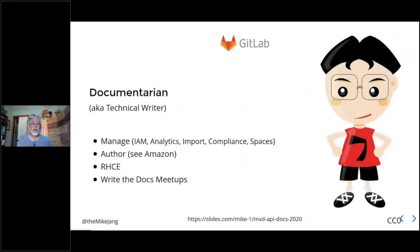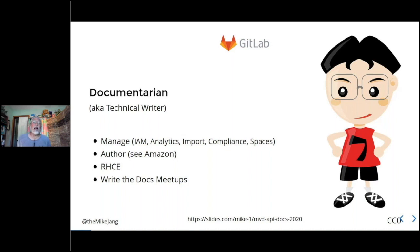Now to introduce myself: I call myself a documentarian, also known as a technical writer. I work for a company called GitLab, and we refer to ourselves as a single application for the entire DevOps lifecycle. I'm responsible for GitLab documentation in our managed space. Before becoming a tech writer, I wrote a few books, including one on the Red Hat Certified Engineer Exam. I also help with meetups for the Write the Docs organization — we have nearly 50 meetups worldwide, but for now we're all virtual.